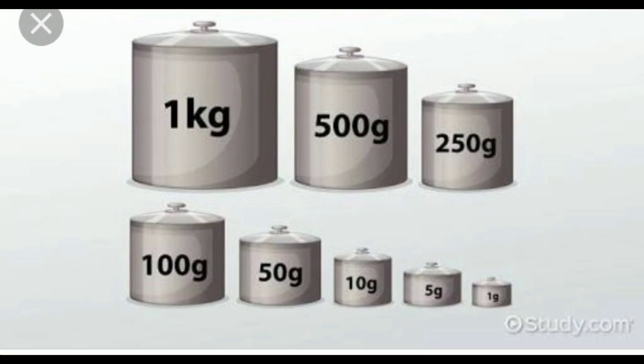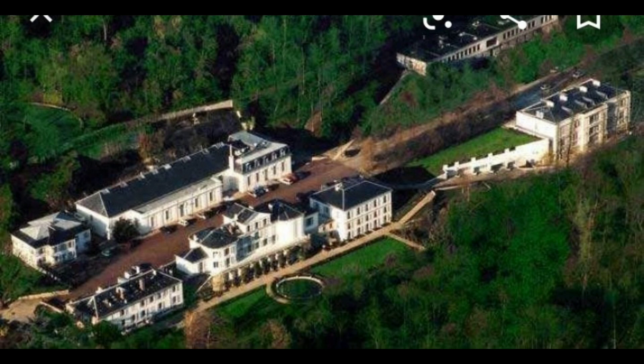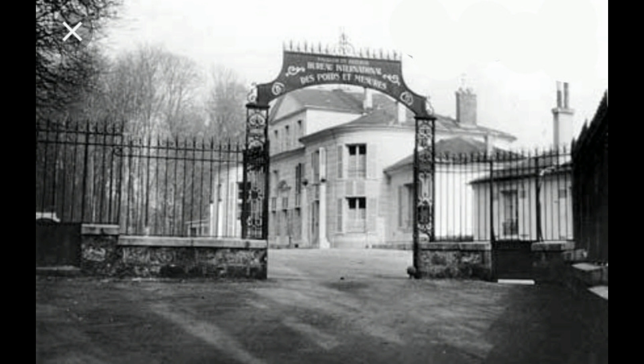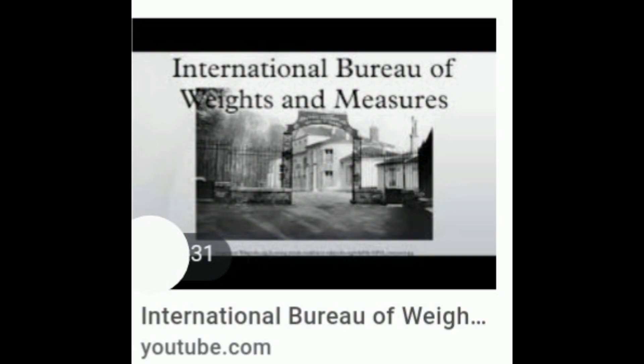The SI unit of mass is kilogram. One kilogram is the mass of a particular international prototype cylinder made up of platinum iridium alloy, kept at the International Bureau of Weights and Measures at Sevres, France.